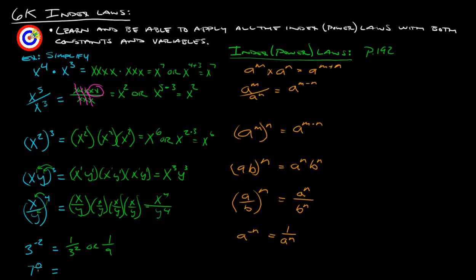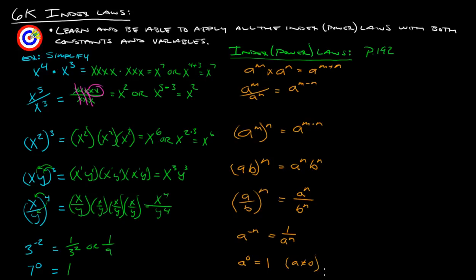The seventh law: 7 to the 0. Pretty much anything to the 0 power just equals 1, as long as the base doesn't equal 0. So we write that as a to the 0 equals 1, with the stipulation that a cannot equal 0. These are all the power laws, and here's how they all work.